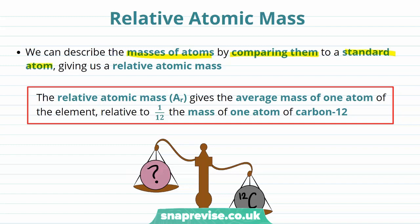It's therefore most useful to describe the mass of an atom by comparing it to a standard atom, giving us what is known as a relative atomic mass. We can formally define relative atomic mass, or our Ar value, as the average mass of one atom of that element, relative to 1/12 the mass of one atom of carbon-12.